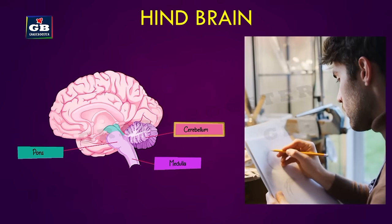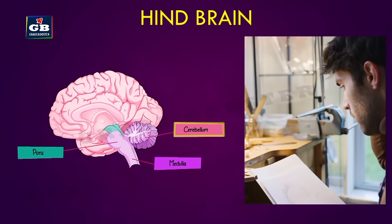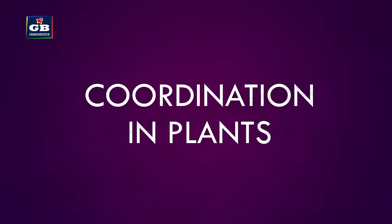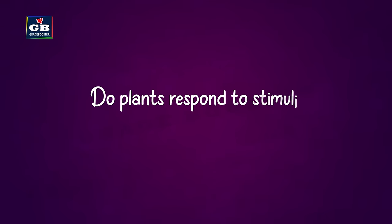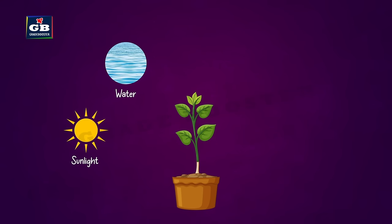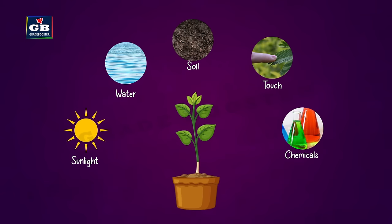Walking in a straight line, riding a bicycle, and drawing — all these are possible because of the cerebellum. These are the different parts of the brain and their functions. Moving on to coordination in plants: yes, plants do respond to stimuli like sunlight, water, soil, touch, and chemicals.